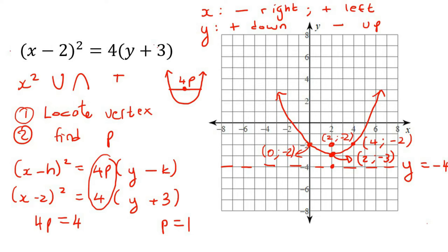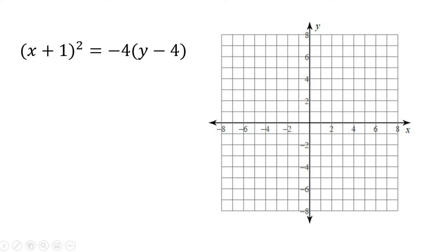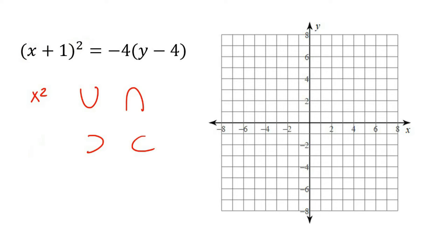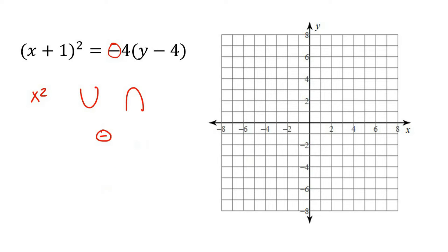Here's the next example. The rest of this lesson will cover examples going down, left, and right. Step one: identify the direction. It's x squared, so this is up or down. There's a negative in front, so that means down. Remember: negative means down, and if it's positive or there's nothing in front it means up. So we should have a graph that faces down.